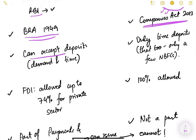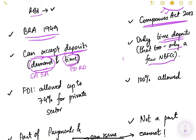Banks can accept both demand deposits and time deposits. Demand deposits include current accounts and savings accounts, while time deposits include fixed deposits and recurring deposits. NBFCs, on the other hand, can accept only time deposits, and even then, only a few NBFCs that have specific permission to do so — not all NBFCs can accept deposits from the common public.